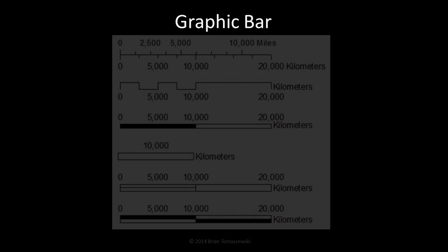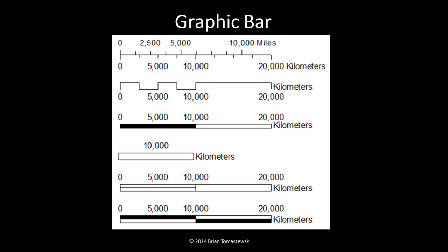Perhaps the most common and useful form of expressing scale is with a graphical bar or other visual device, as shown in these examples. Graphic bars allow a map reader to visually inspect distances displayed on the graphic bar and quickly compare those distances with map distances to determine ground distance.